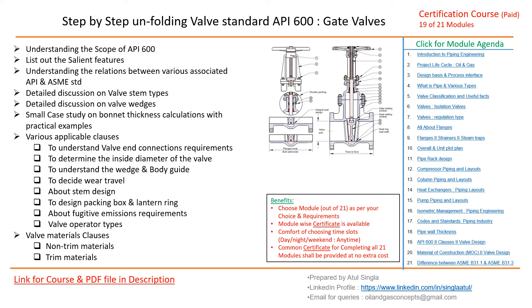Then there will be a detailed discussion on valve stem types, followed by another detailed discussion on valve wedges. Then a small case study on bonnet thickness calculations with respect to API 600 and ASME 16.34, and we'll take a few practical examples to understand the difference.